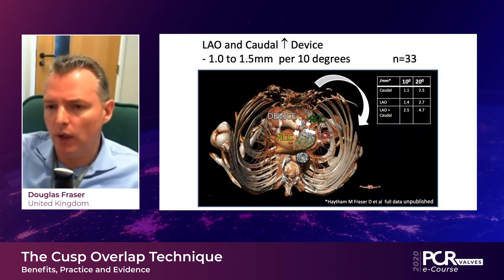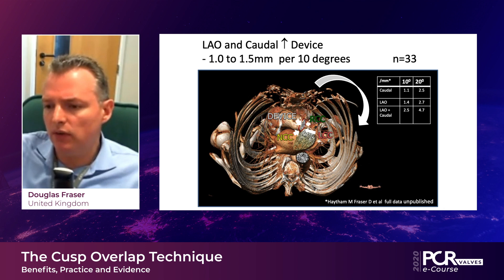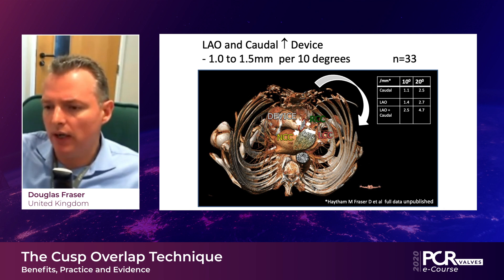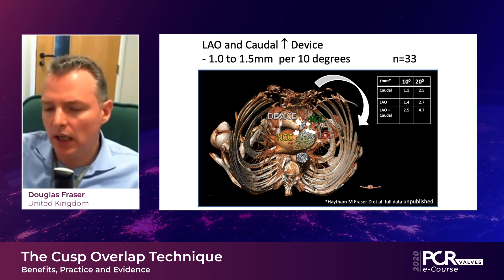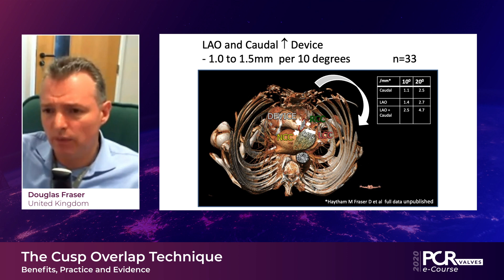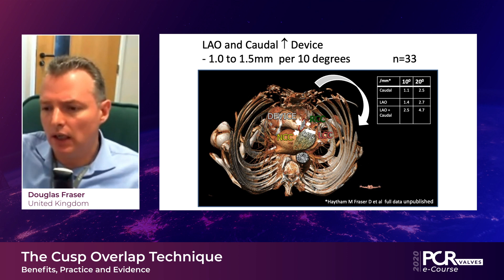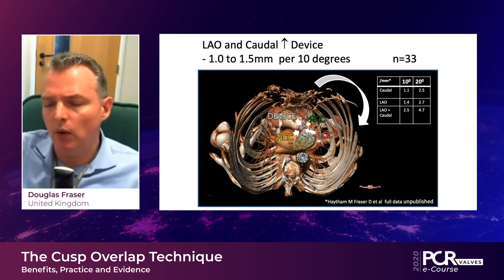We did a study where we showed that for every 10 degrees you come off the annular plane, the device looks between 1 and 1.5 millimeters higher than it actually is, because it is elevated above the two remaining cusps. It's a very consistent finding — in every patient there is elevation when you come LAO or caudal.